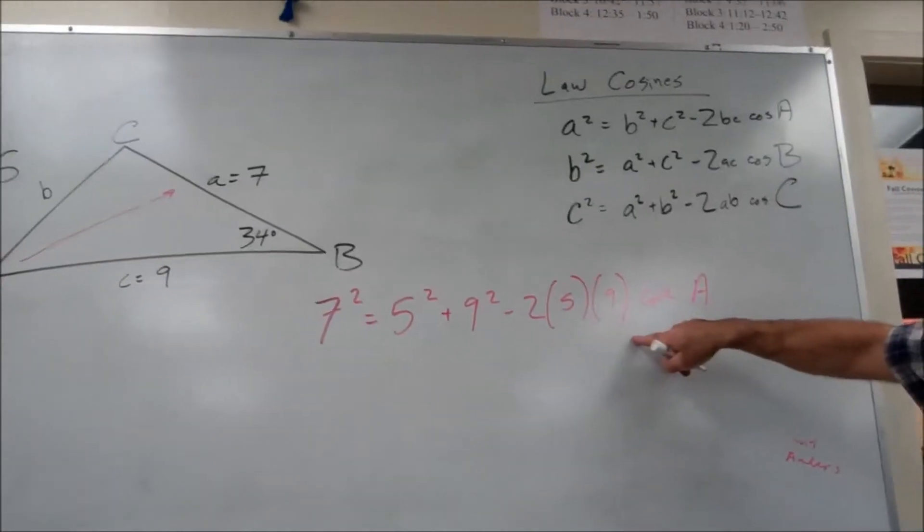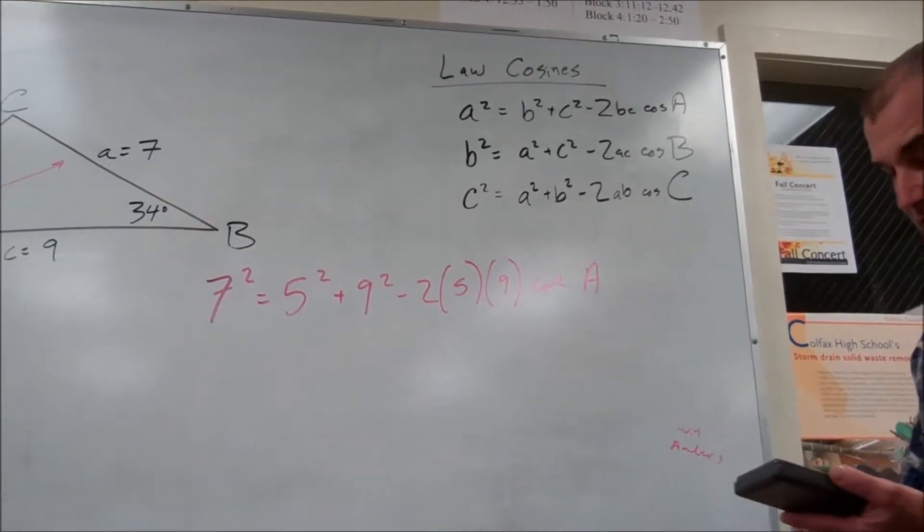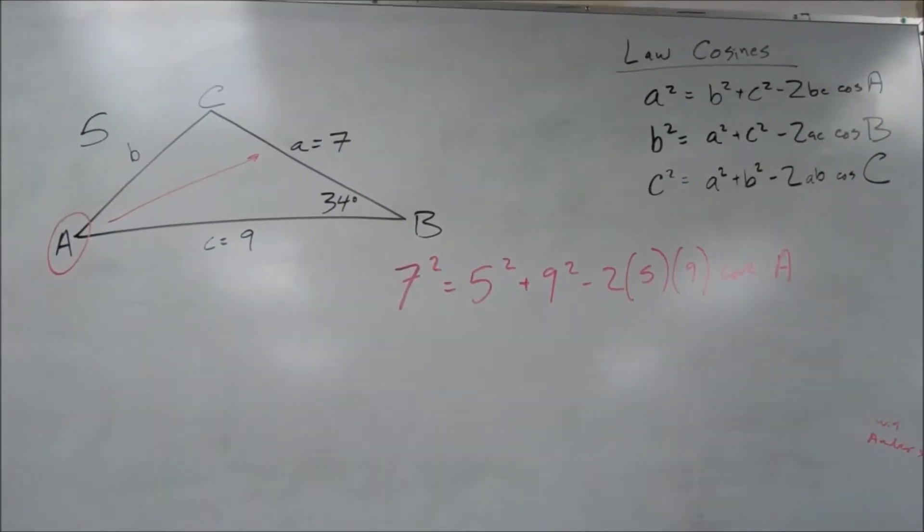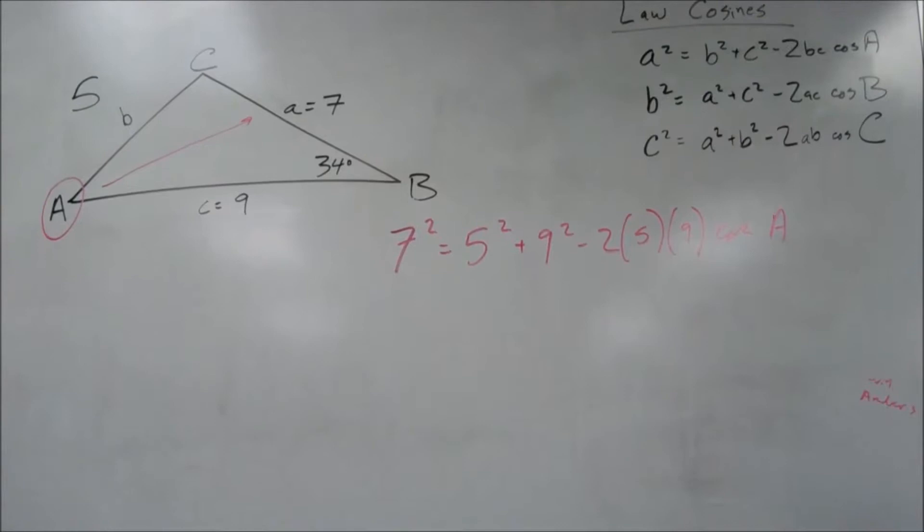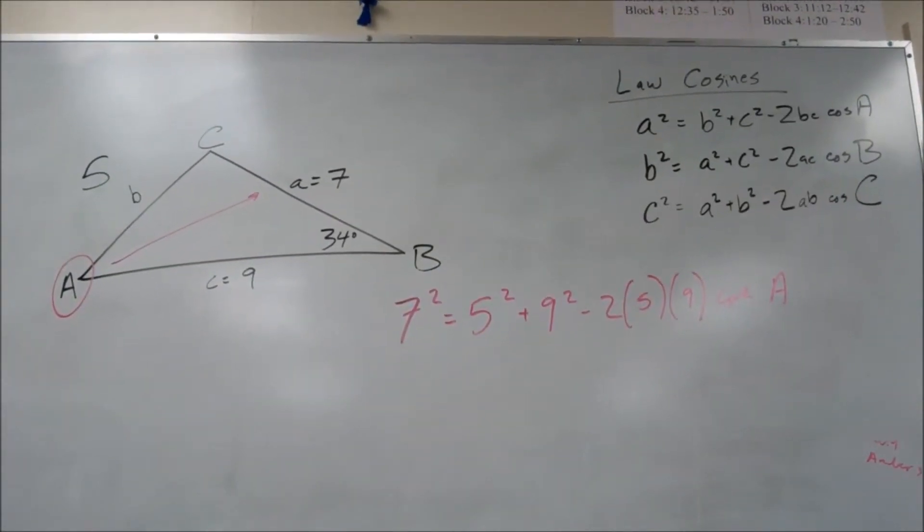Four unknowns. I have three of them. I plug them in and I solve for A. Now I'm solving an equation. So I have to isolate the variable A. So I go 7 squared equals minus 5 squared minus 9 squared.